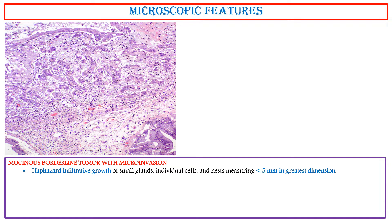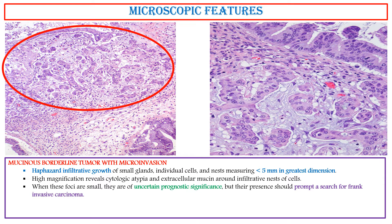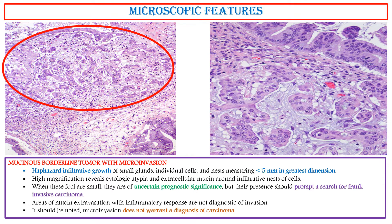Mucinous Borderline Tumor with Microinvasion: This photo shows a haphazard infiltrative growth of small glands, individual cells, and nests, measuring less than 5 mm in greatest dimension. High magnification reveals cytologic atypia and extracellular mucin around infiltrative nests of cells. When these foci are small, they are of uncertain prognostic significance, but their presence should prompt a search for frank invasive carcinoma. Areas of mucin extravasation with inflammatory response are not diagnostic of invasion. It should be noted that microinvasion does not warrant a diagnosis of carcinoma.